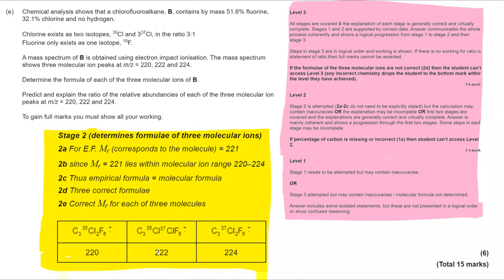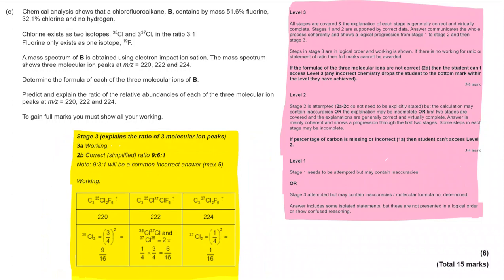And then for stage three we would need to get the ratios of 9 to 6 to 1. Now the way that you look at that is you consider first of all the relative abundances of chlorine-35 and chlorine-37. And you must also consider that the chlorine-35 and chlorine-37 could occur in two different ways. And if you take a look through the figures there I hope you can see where that has come from.